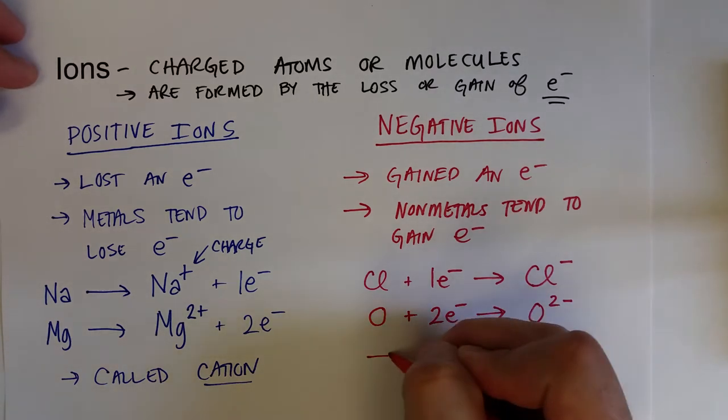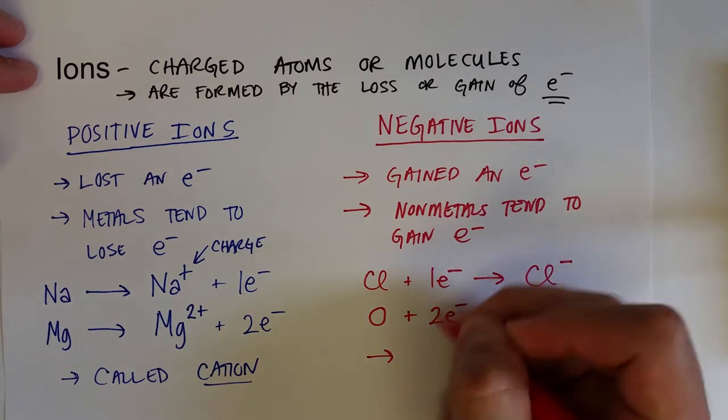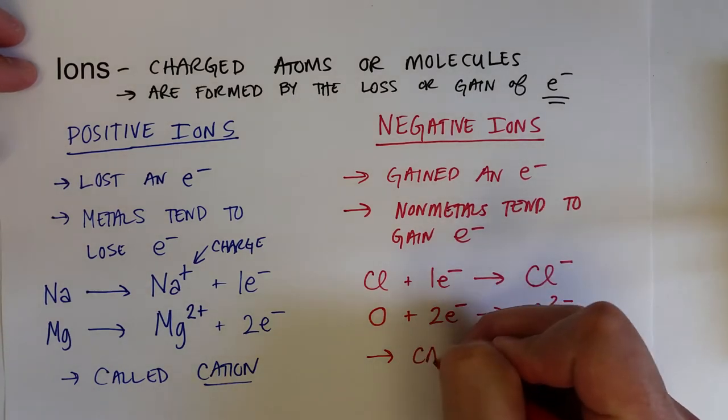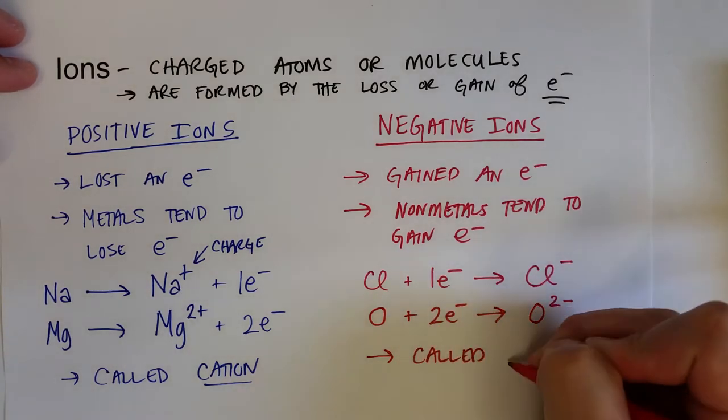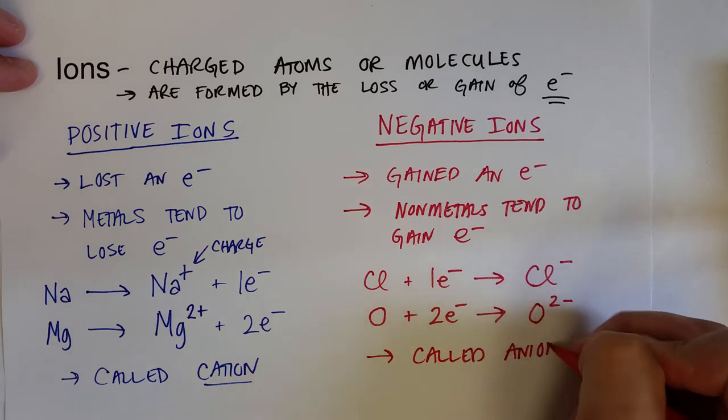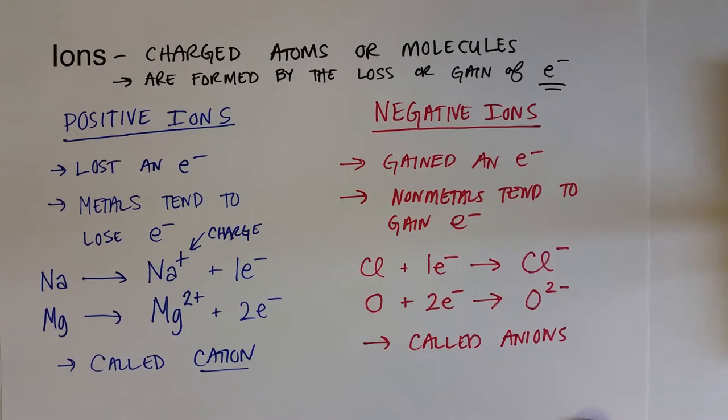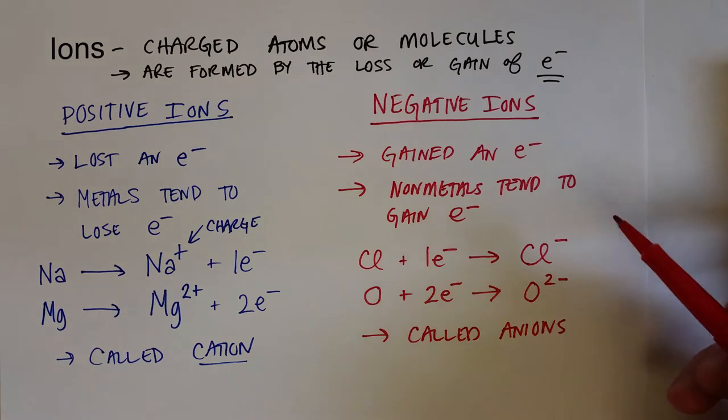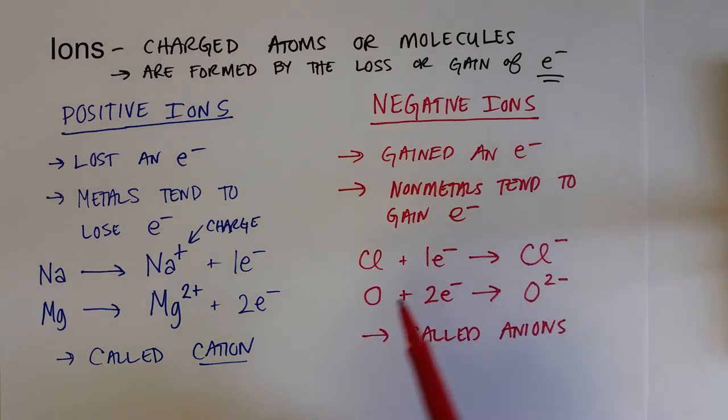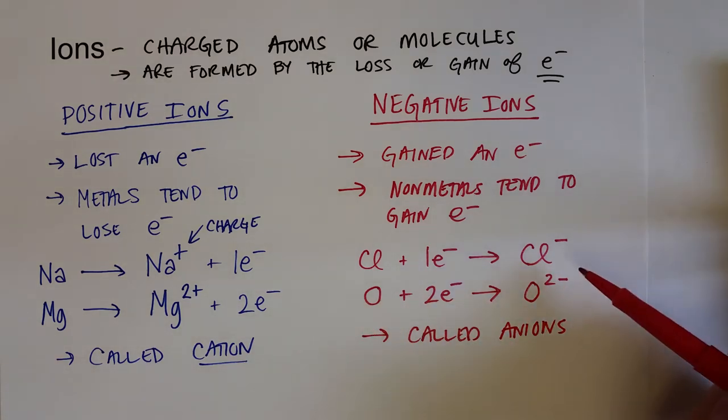These, in contrast to the cations, negatively charged ions are called anions. And the anions of elements have their name changed.